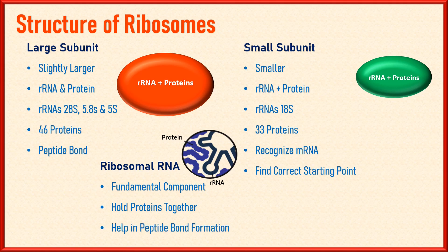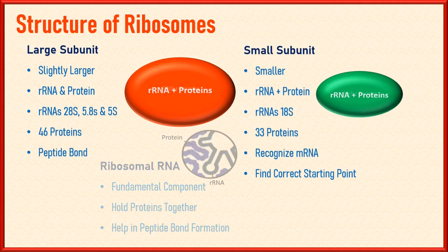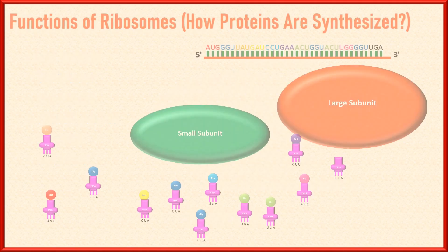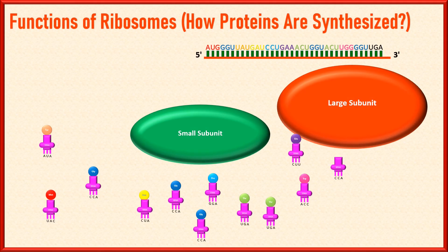Ribosomal RNA also participates directly in the catalytic activity of ribosomes, aiding in the formation of peptide bonds between amino acids during protein synthesis. When both subunits are separate, they are inactive, but if they are present together, they are activated and are synthesizing proteins. Now, how do ribosomes synthesize protein? The major function of the ribosome is to synthesize proteins for the cell itself or for export outside the cell, usually called secretion.